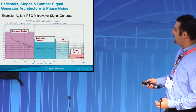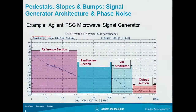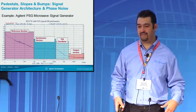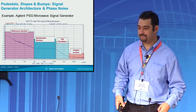Last but not least, we have the broadband noise. We're talking a few megahertz offset all the way out to hundreds of megahertz offset. That's typically determined by the front end or the RF chain of your instrumentation.